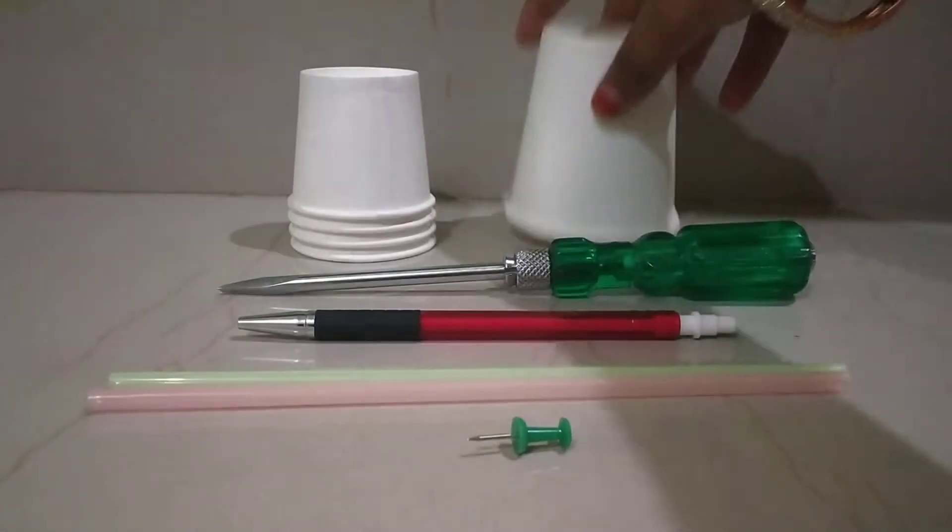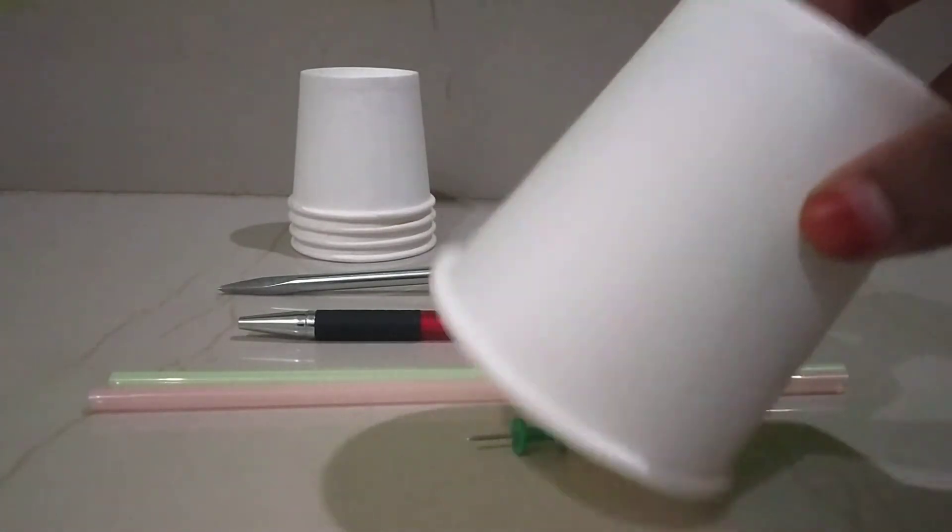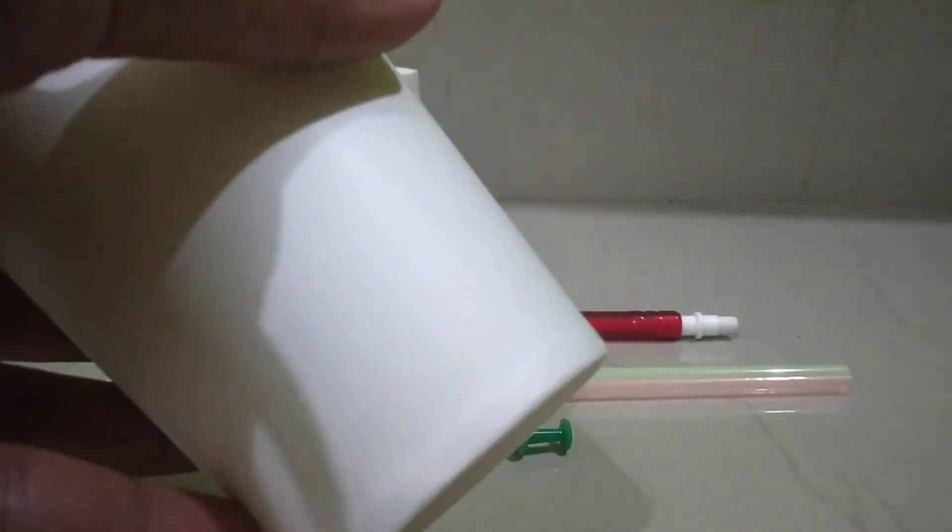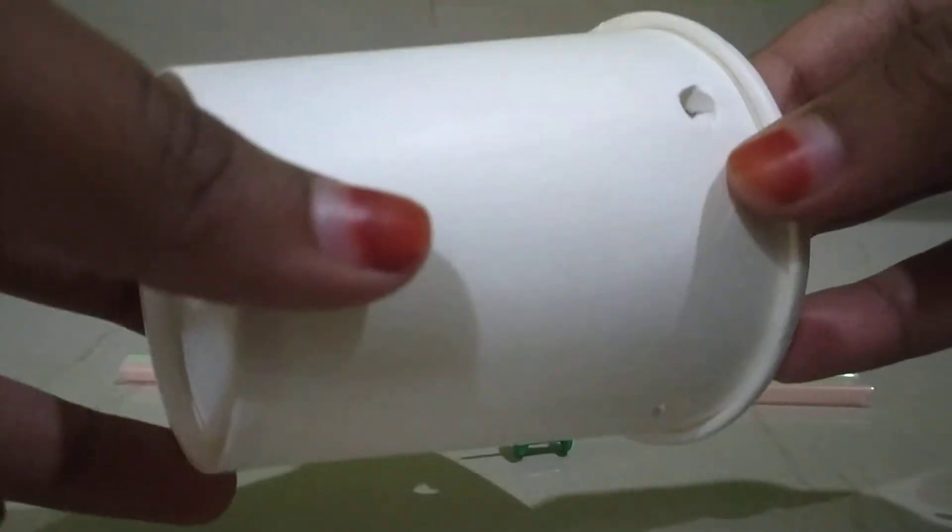First take the disposable cups and make holes with this. Make holes on four sides of the cup.